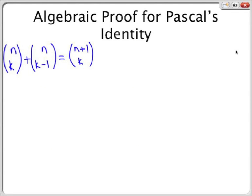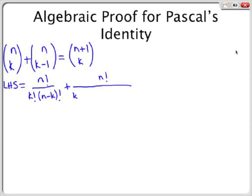We will continue with another type of proof: an algebraic proof of Pascal's Identity. First, we need to show that n choose k plus n choose k minus 1 is equal to n plus 1 choose k. We will begin by rewriting the left-hand side and then continue algebraically. Please try to follow along with the steps being written. Now we will get a common denominator and simplify.